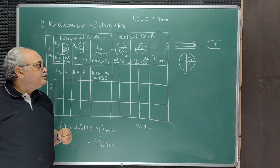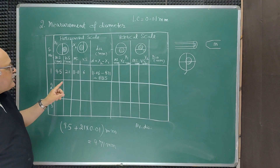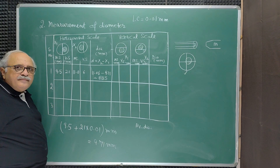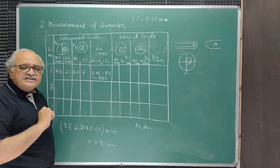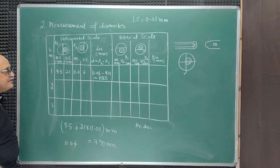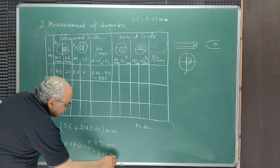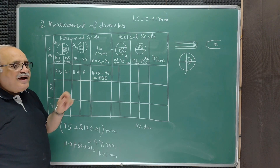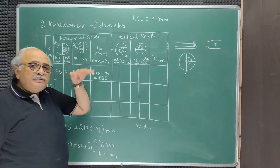Then, using the adjusting screw, move the vertical cross wire until it reaches the other end of the orifice image and do the same recording. This time the main scale is just crossing 11 mm, and the 6th vernier scale division is coinciding with a main scale division. So this reading is 11.0 + (6 × 0.01) = 11.06 mm. Take the difference between these two values and that gives you the diameter of the orifice observed with the horizontal scale.